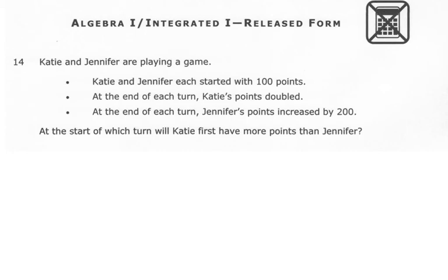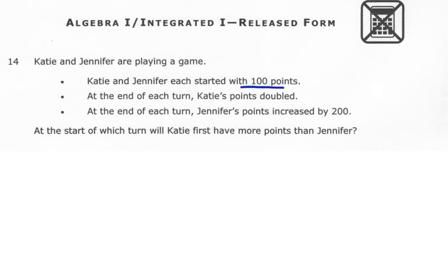Number 14. Katie and Jennifer are playing a game. Katie and Jennifer each started with 100. So that tells me at the end of each turn, Katie's points doubled. And Jennifer's increased by 200. At the start of which turn will Katie first have more points than Jennifer? All right. This is a little bit of a play on words because if you look here, it says at the end of each turn, and then our question wants to know at the start of which turn. So reading this critically, when we make our table up, we want to make sure that we are putting it in the same terminology as our question, which would mean at the start of each turn. So when I make my table, it's all going to be start.